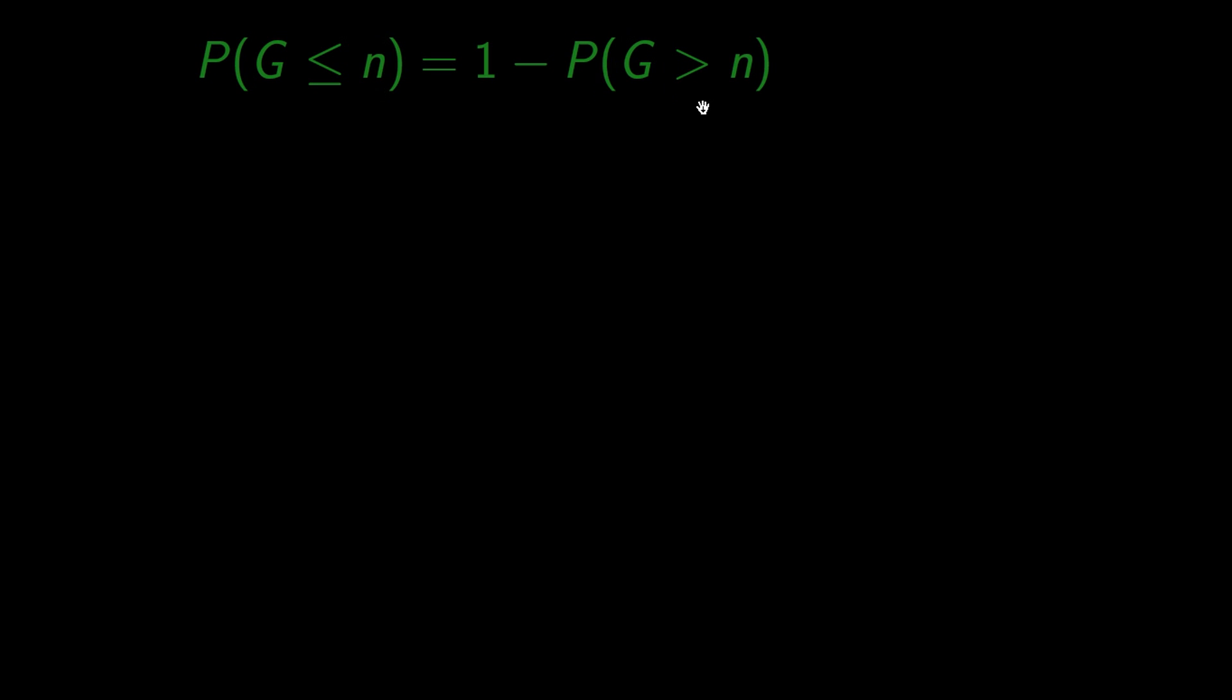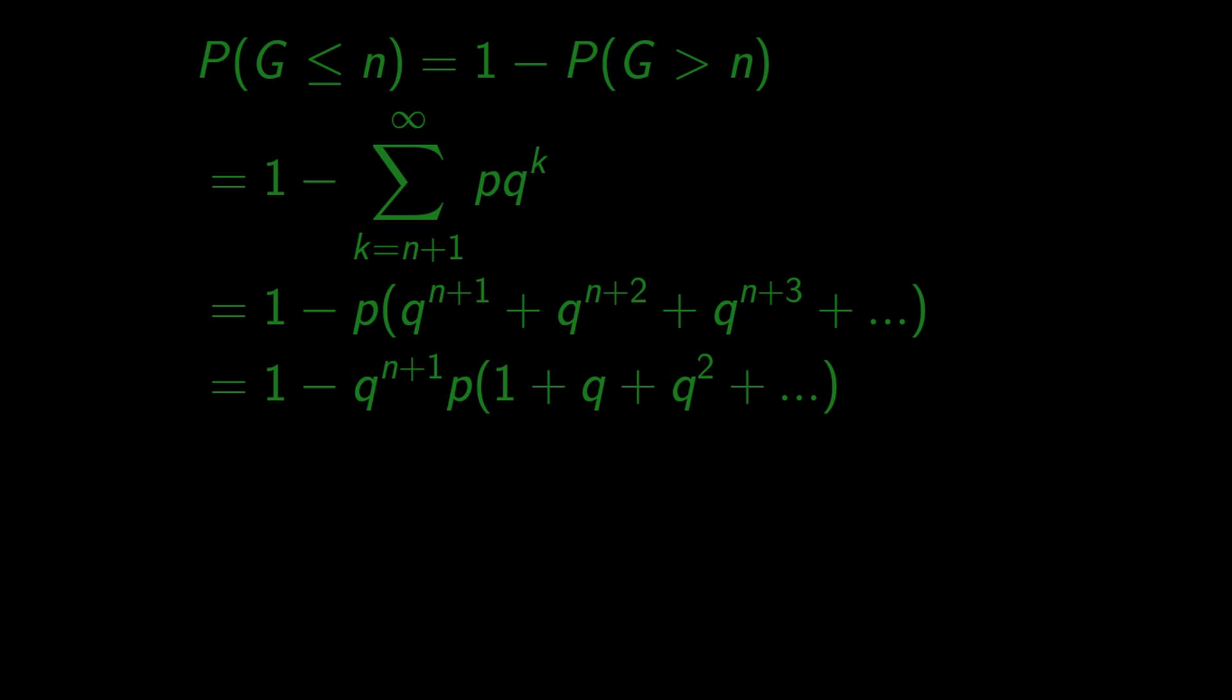And this is something similar to what we already calculated. The only difference is that here the first element is q to the power of n plus 1. If we take it out of the sum, what we are left with is exactly what we calculated before and it's equal to 1.